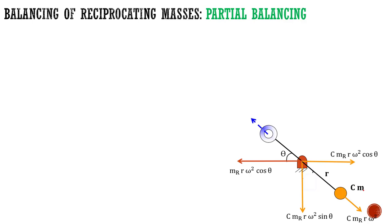In this system, mr·r·ω²·cosθ is the unbalanced reciprocating force. We are going to add a balancing mass along the direction of the crank in the opposite direction. The balancing mass is mr. Since we are going to carry out partial balancing, we have added a fraction value that is c.